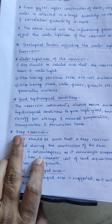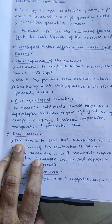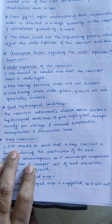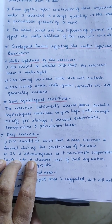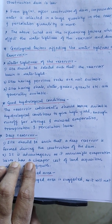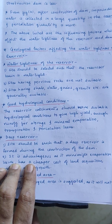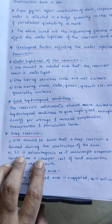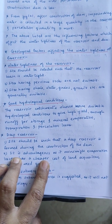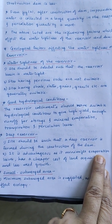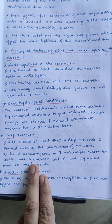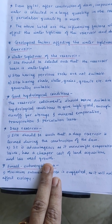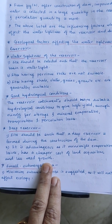The next factor is deep reservoir. The site should be such that a deep reservoir is formed during the construction of the dam, so that the depth of the reservoir is more and evaporation losses from the reservoir are less. It is advantageous as it minimizes evaporation, has cheaper cost of land acquisition, and results in less weed growth, which is very important from a water pollution point of view.